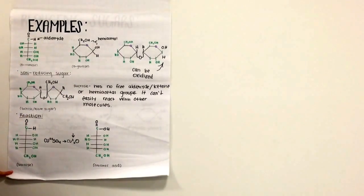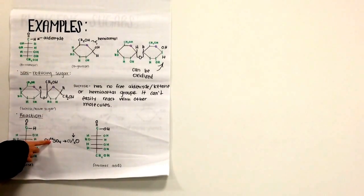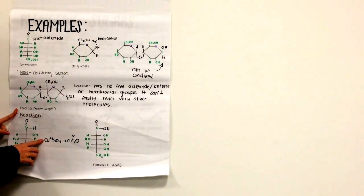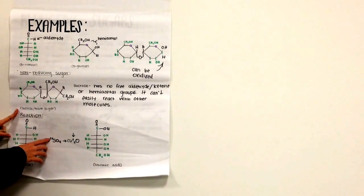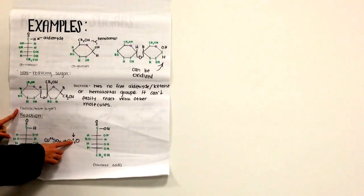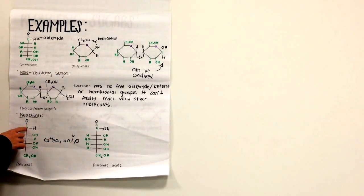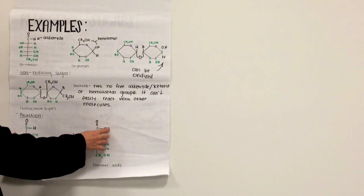This reaction is glucose with Benedict's reagent to form gluconic acid. Notice that the copper goes from Cu2+ to Cu+. And right here this carbon goes from COH to COOH.